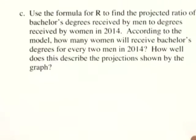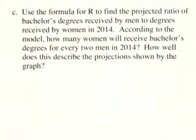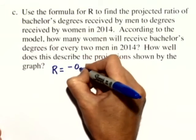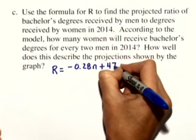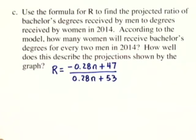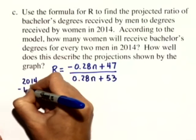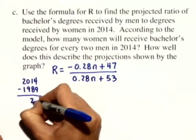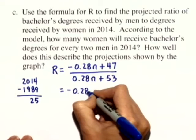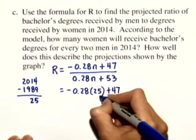In Part C, we use formula R to find the projected ratio of bachelor's degrees received by men to degrees received by women in 2014. According to the model, how many women will receive bachelor's degrees for every two men in 2014? We rewrite the ratio: R equals negative 0.28N plus 47 divided by 0.28N plus 53. We're looking at 2014, so subtracting 1989 gives 25 years later — N is equal to 25. We substitute 25 in for N and calculate this ratio.